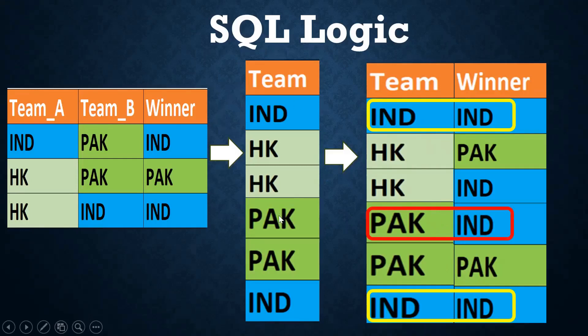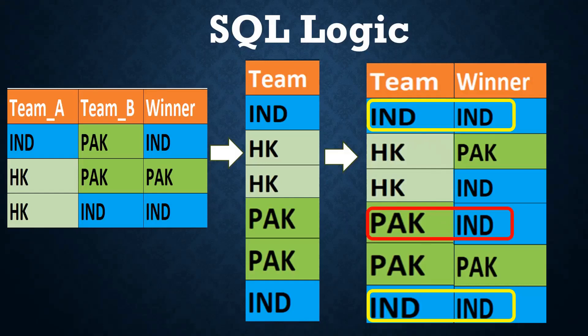So first I take team A and team B and club them together. In a similar fashion, I put the team along with the list of winners. When team and winner are both the same, we mark it as a win. When both are different, it is a losing team. For example, Pakistan losing, or Hong Kong losing while Pakistan is the winner.